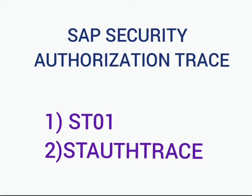You can switch on the trace using T-codes like ST01 or ST/AUTH TRACE. These traces can be either for a specific instance or system-wide. You can trace for all users at once, or for a specific user, specific T-code, or a specific program. In this video, let us see at a glance the usage of ST01 and ST/AUTH TRACE T-codes.